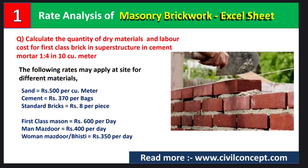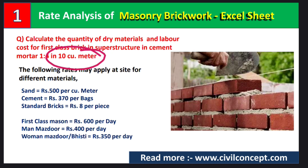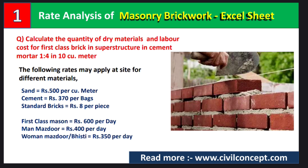Here I have taken brick masonry of 10 cubic meters. The question is: calculate the quantity of dry materials and labor cost for first class brick in superstructure in cement mortar 1:4, for 10 cubic meters of brick work. This quantity may be different according to the length, width, and height of the wall, so I am directly taking 10 cubic meters here.